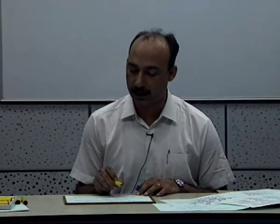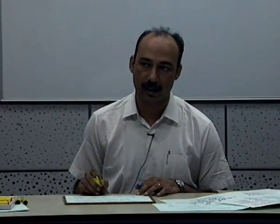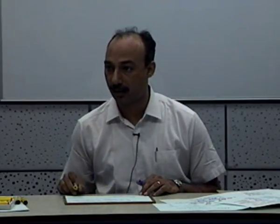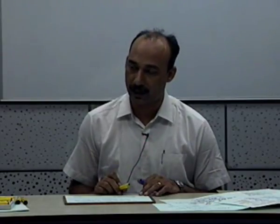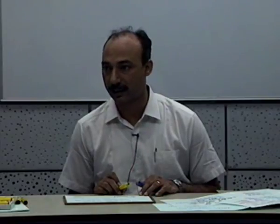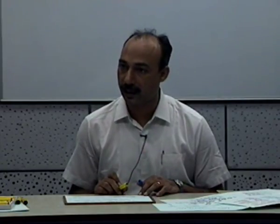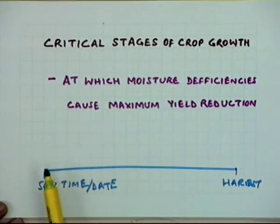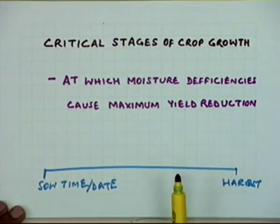These critical stages of crop growth vary from crop to crop, just as the sensitivity of crops as a whole varies from one crop to another. For each individual crop, within the crop growth period, there are stages which are more critical than others. Knowledge of which stages are more critical is very essential when you want to schedule irrigation — to know when to irrigate — and at what time of the crop growth period that stage is active.